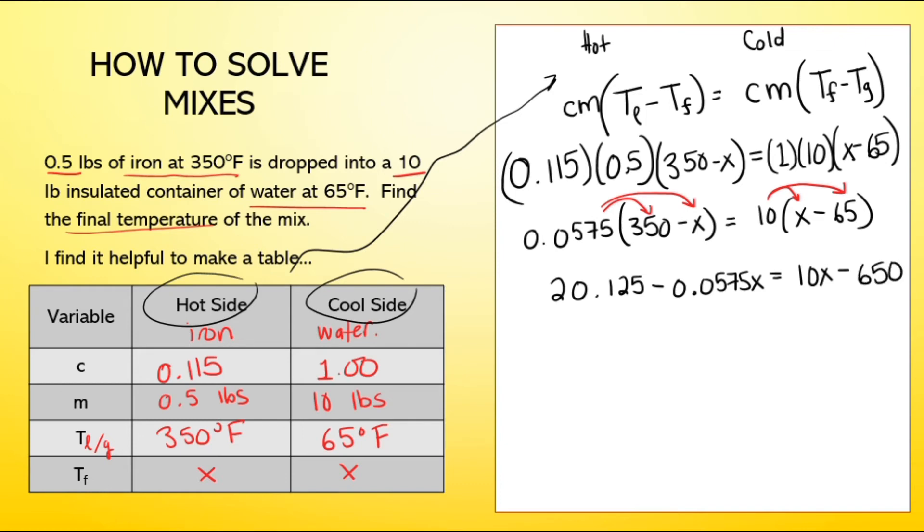If you're struggling with the algebra, I suggest you ask me for some resources. Next step is we're going to gather our X's on one side and our numbers on the other. What I think I want to do is move this number over to the right side to get both the 10X and the 0.0575X on the right side. If you move something across an equation, if it's negative on the left side, it's going to be positive on the right side.